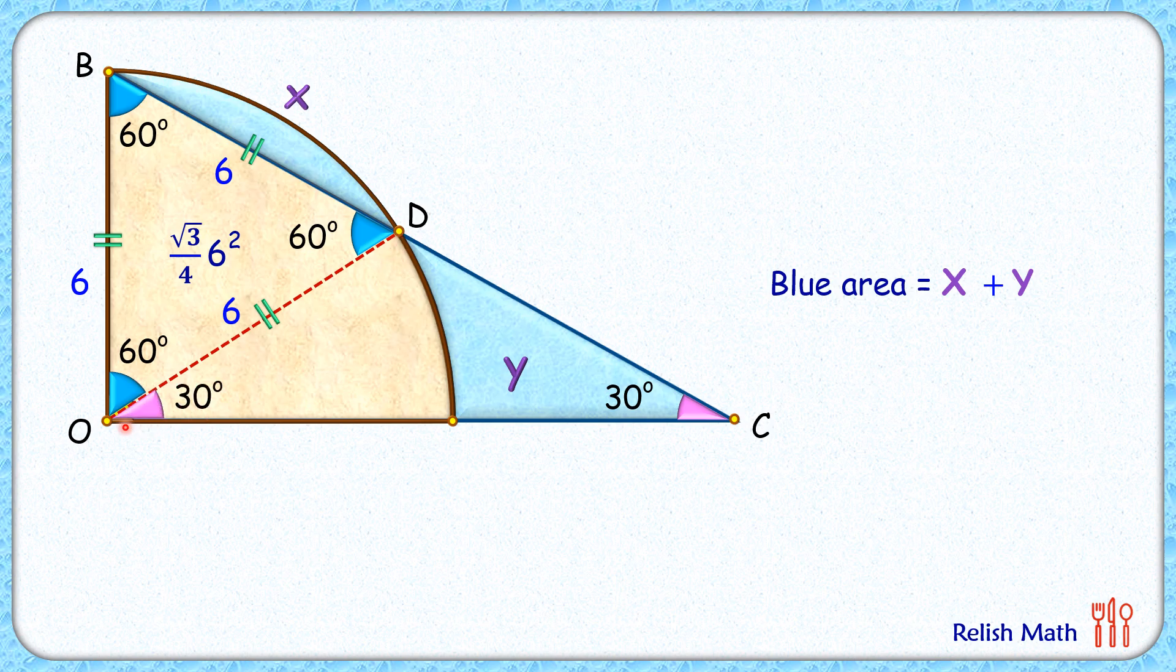Now here, again, ODC is an isosceles triangle, so we can say the length DC is also 6 centimeters. And if you look at this full triangle BOC, D is the midpoint of hypotenuse BC.